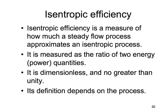In this lecture video, we are going to talk about isentropic efficiency. Isentropic efficiency is defined for a steady flow process or a steady flow device. It is a measure of how close the steady flow process approximates an isentropic process. It is a ratio of two energy or power quantities. It is dimensionless and can never be greater than or even equal to one. What complicates things is that the isentropic efficiency definition varies depending on what process we have.